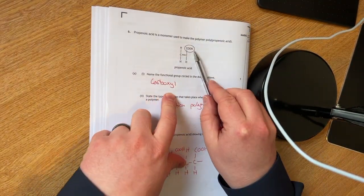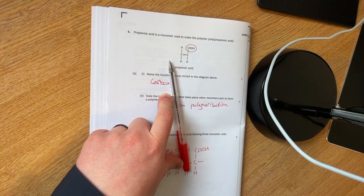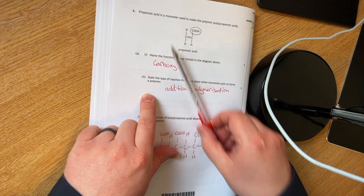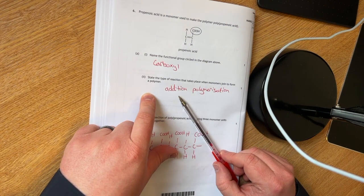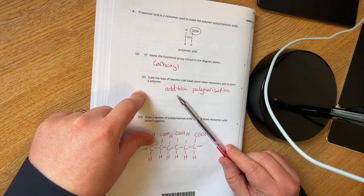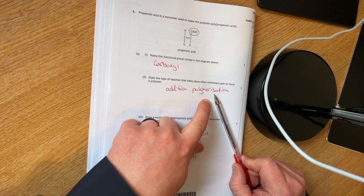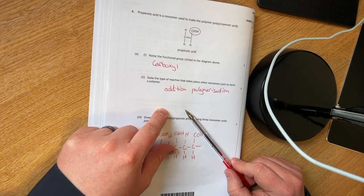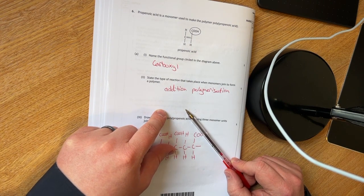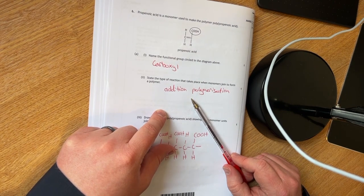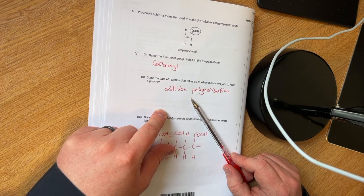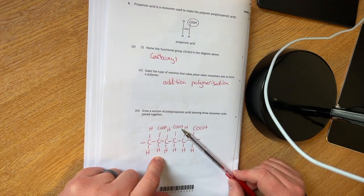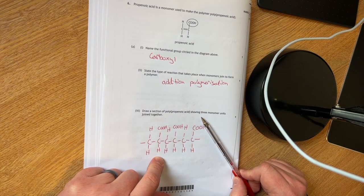Question six. You have to name the functional group circled. That is a carboxyl group. 6A part two. You have to state the type of reaction that takes place when monomers join to form a polymer. That is an addition polymerization. There are condensation polymerizations that you learn about in the higher chemistry. You only see addition polymerization now. So I expect they're wanting you to say addition.